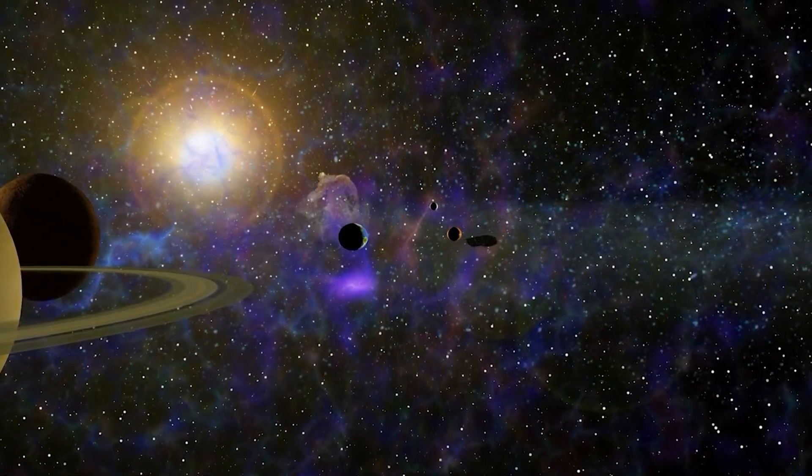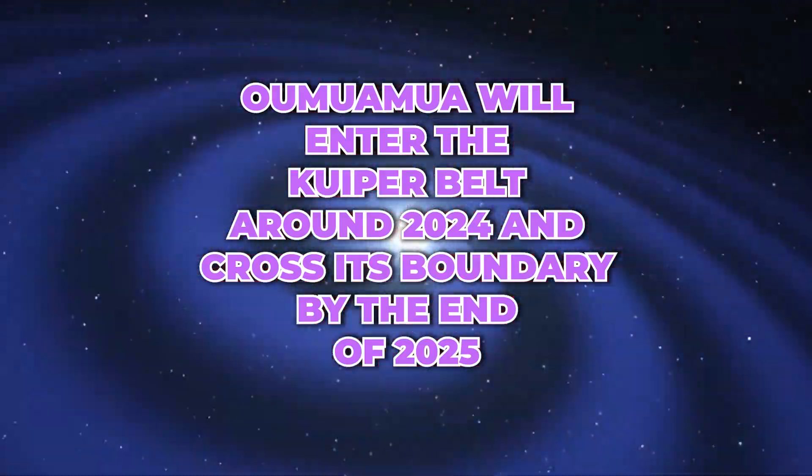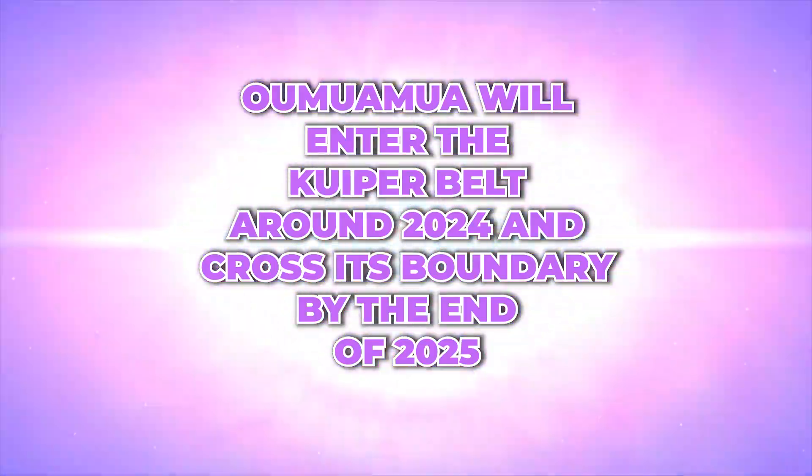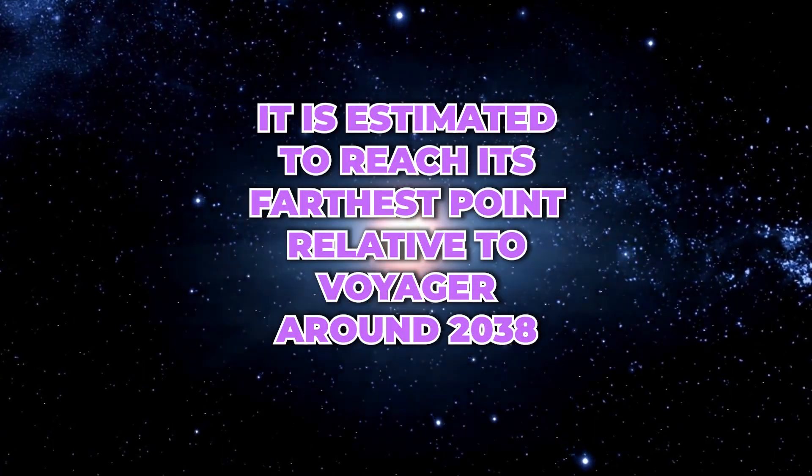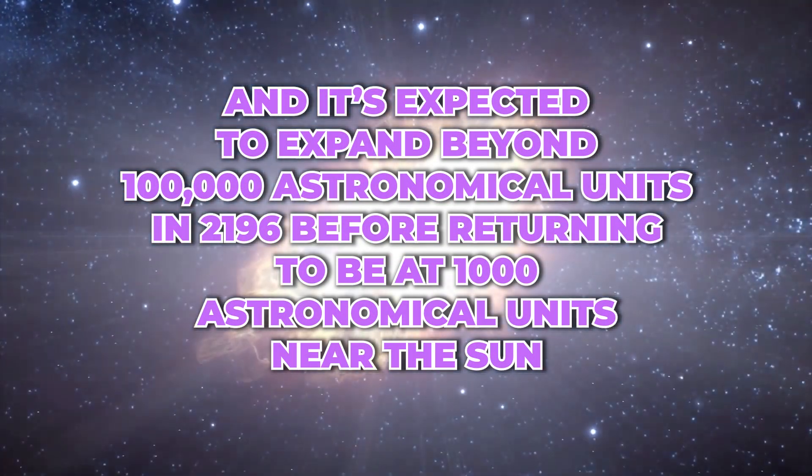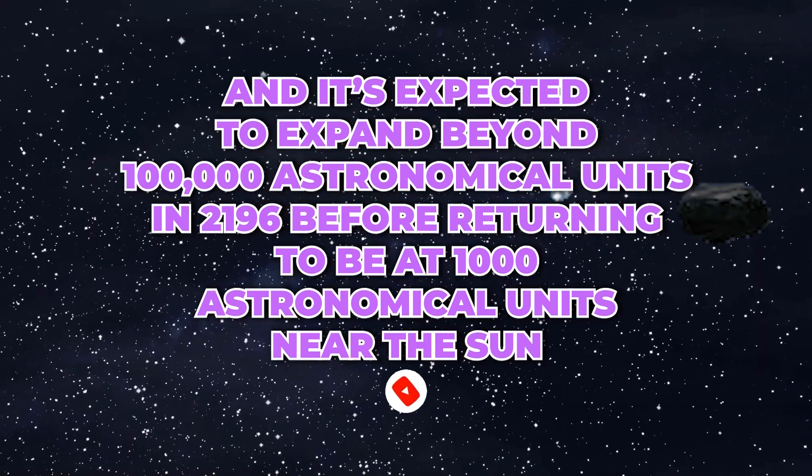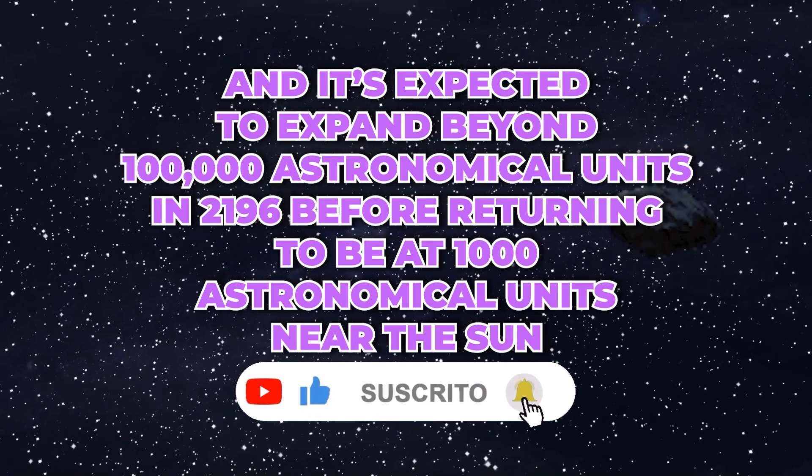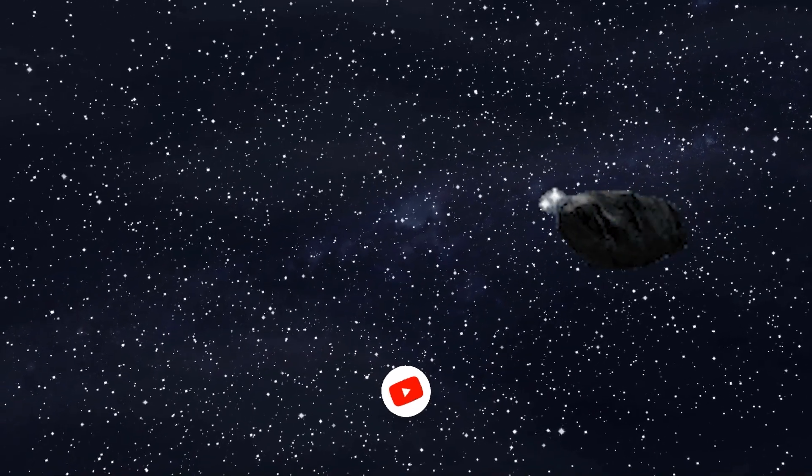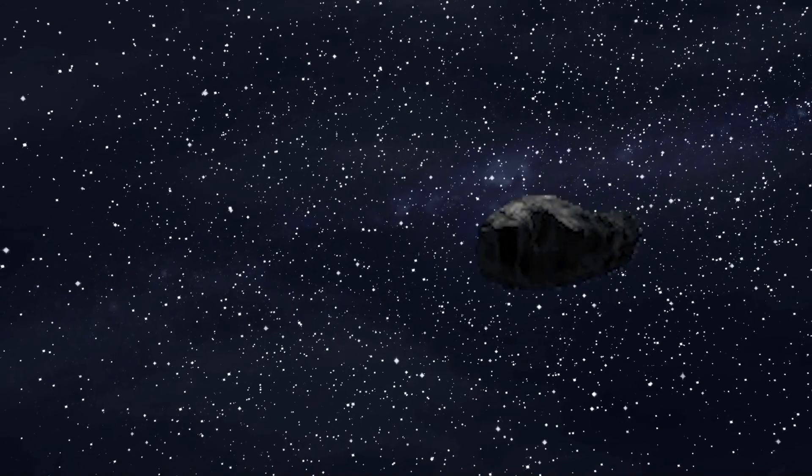According to predictions by other astronomers, Oumuamua will enter the Kuiper Belt around 2024 and cross its boundary by the end of 2025. It is estimated to reach its farthest point relative to Voyager around 2038, and it is expected to expand beyond 100,000 astronomical units in 2196 before returning to be at least 1,000 astronomical units near the sun. Therefore, depending on how we define the solar system boundary, we will be able to determine when Oumuamua actually crosses it.